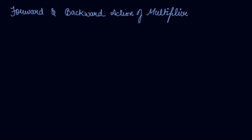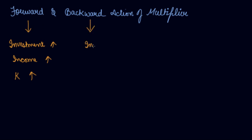In this video we will study about the forward and the backward action of the multiplier. When investment increases, your income increases, so your multiplier also increases — this is the forward action. The backward action is when your investment decreases, your income also decreases and your multiplier also decreases.